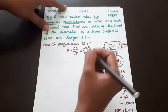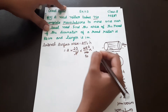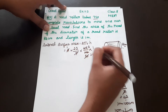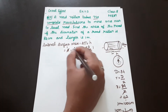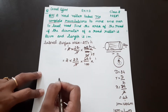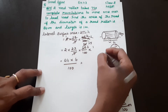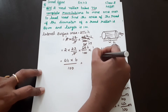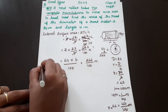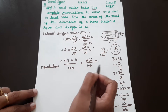Now we simplify: 42 divided by 7 gives 6. So we have 2 into 22 into 6 divided by 100. That is 44 into 6 equals 264, divided by 100. So 264/100 square meters is the area covered in one revolution.